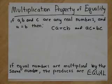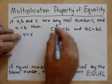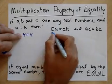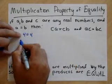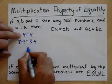We've got the Multiplication Property of Equality. If A, B, and C are any real numbers and A equals B, then we can say that C times A equals C times B. For instance, we know that 4 equals 4, and if our C is 3, then 3 times 4 equals 3 times 4 — yes, both are 12.